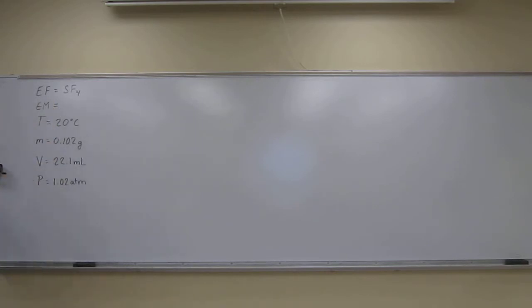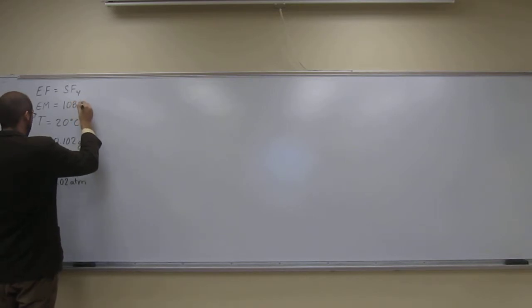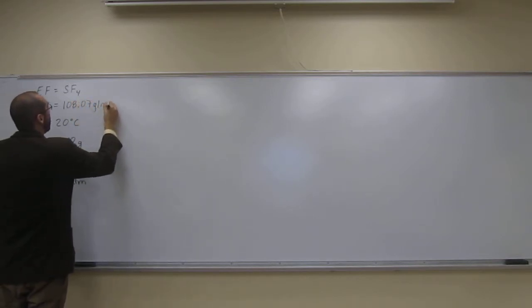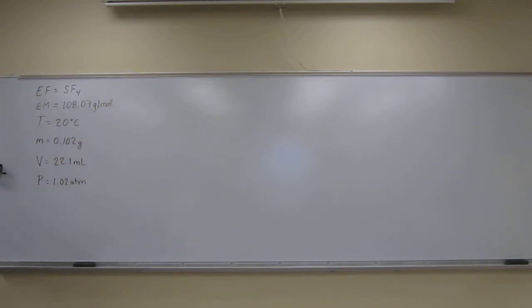So, sulfur 32.07 plus 4 times 19 is 108.07 grams per mole. Okay, or well, we're going to do molar mass anyway, so we'll say grams per mole. So it's going to be a multiple of 108.07. So if you get somewhere close to that, that's the number you're going to put.